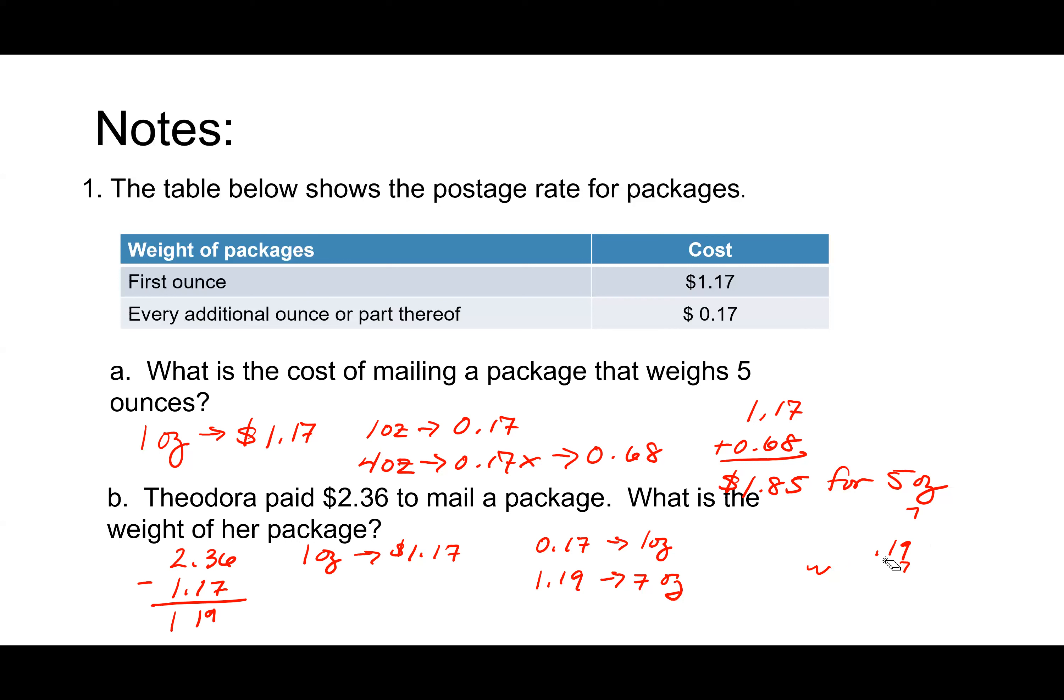There were a couple of ways to do that problem. Did anybody do it a different way? Yeah, Kinsey, you subtracted that dollar 85 from $2.36 and then went from there. So eight ounces was correct on that one.